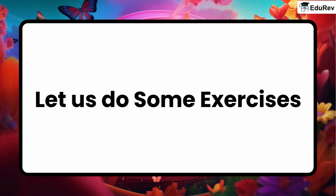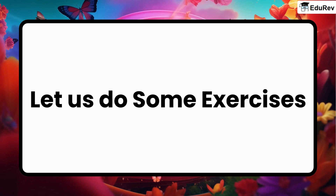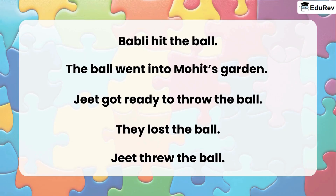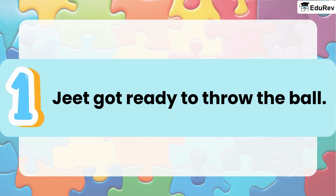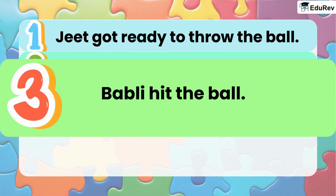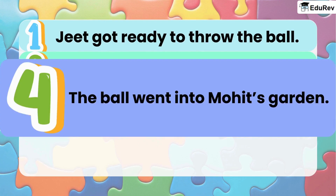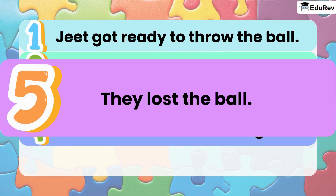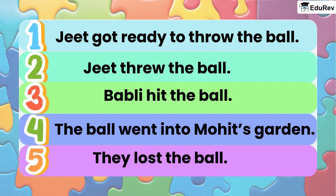Now that we have heard the story, we can do some exercises. Let us put the lines in the order of the story. We will see these sentences and then try to put them in the correct order, numbering them one by one. Jeet got ready to throw the ball. Jeet threw the ball. Bubbly hit the ball. The ball went into Mohit's garden. They lost the ball. So, we have now put them in correct order.